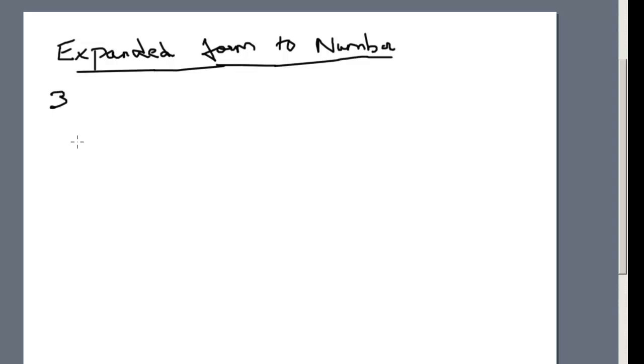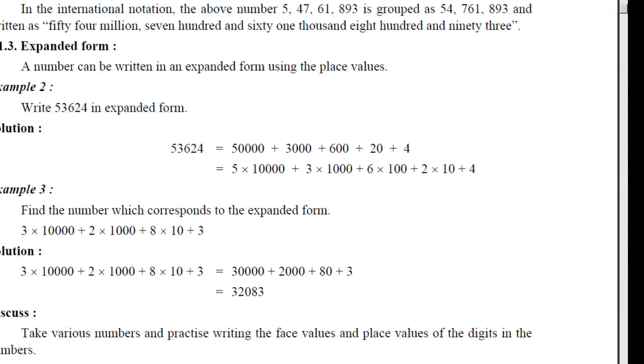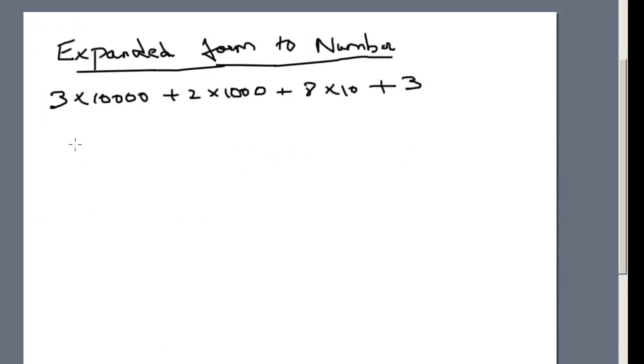So three into ten thousand, three into ten thousand, plus two into thousand, plus eight into ten, plus three. This is the expanded form. Now we are going to find a number for that.